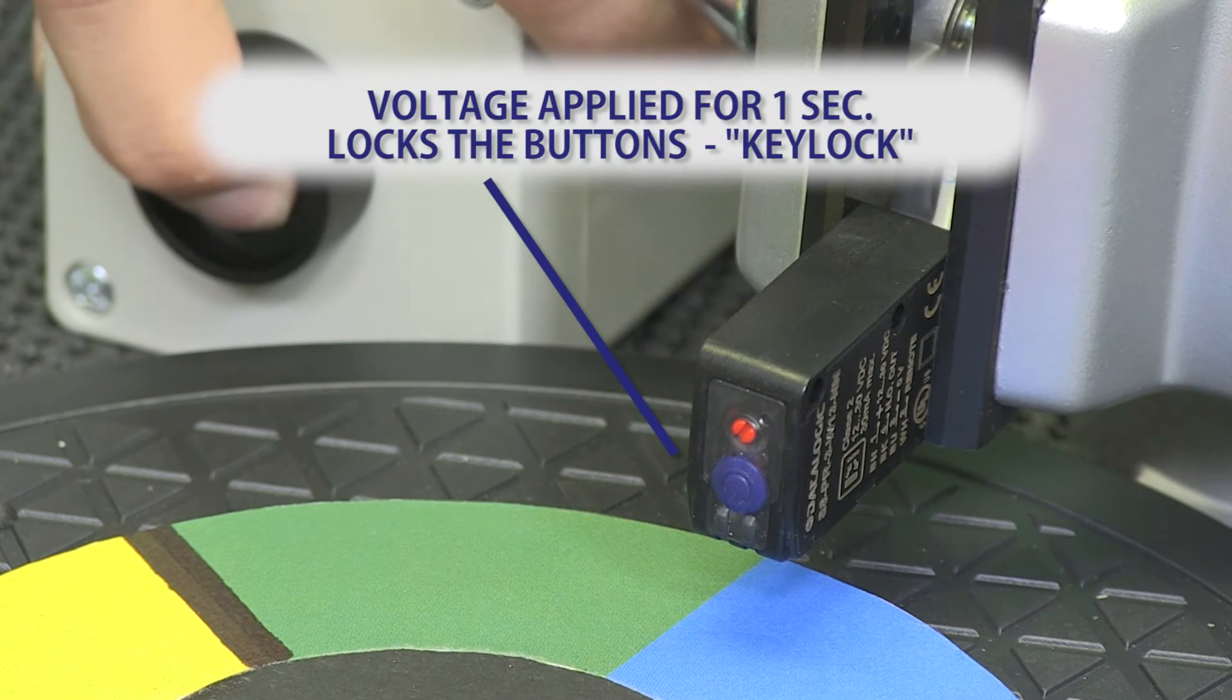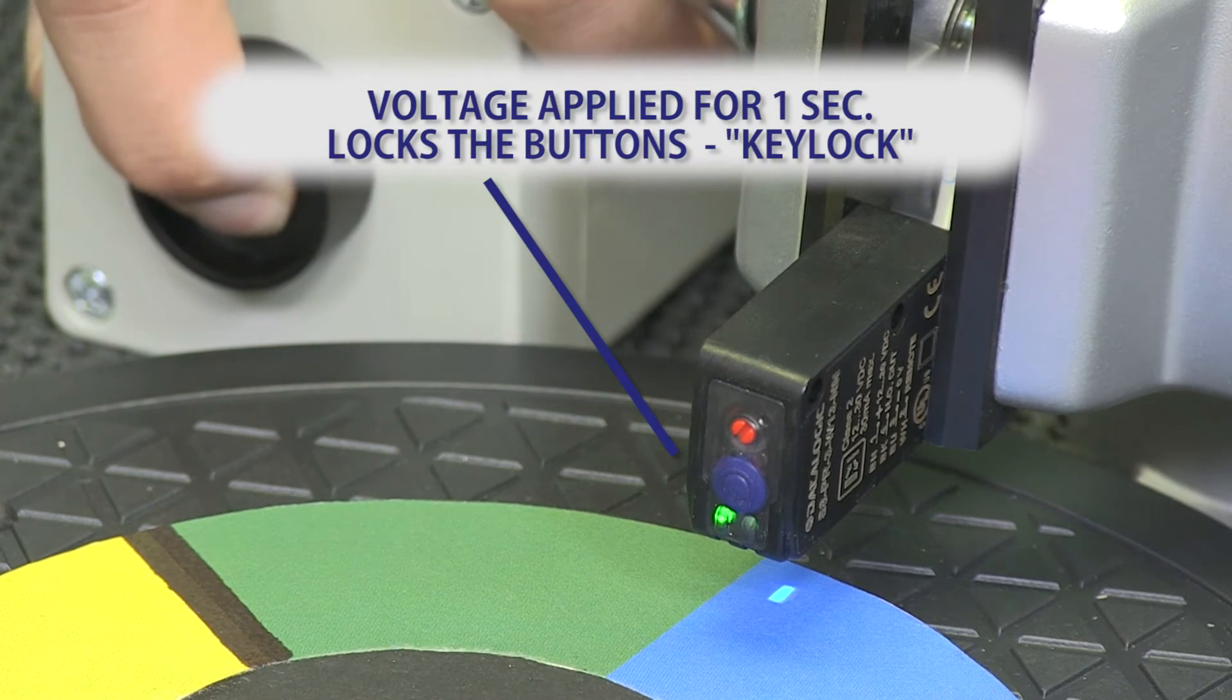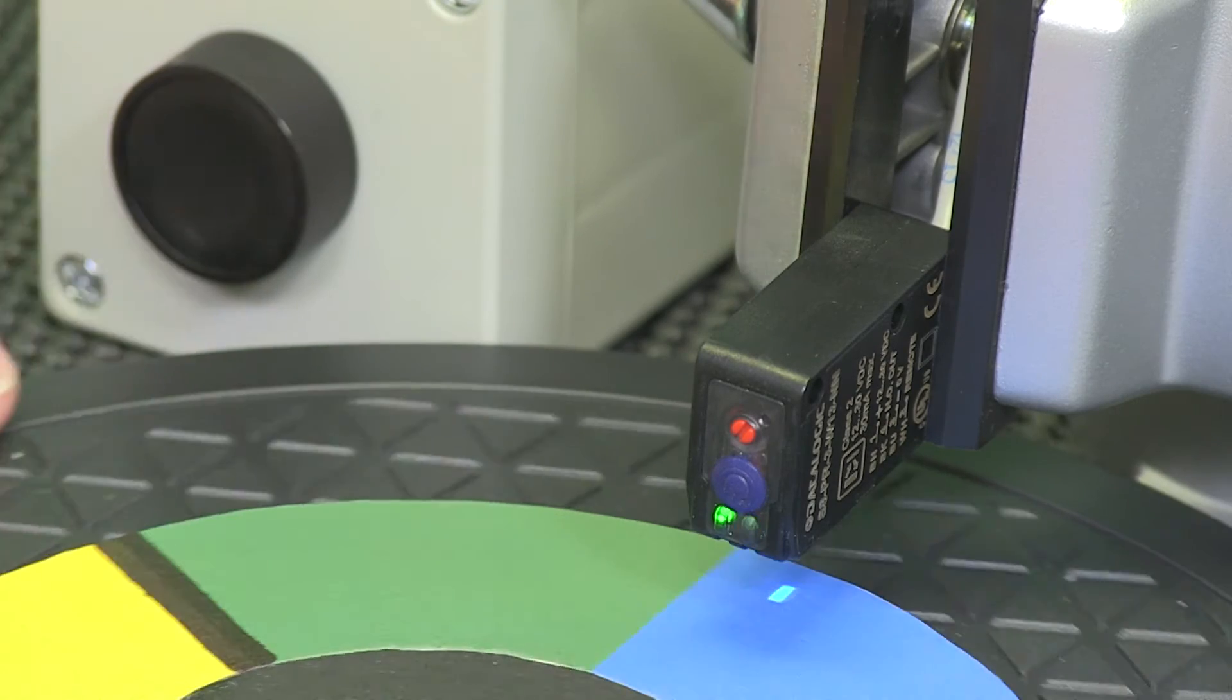This key lock function locks or is activated when the remote wire is connected to positive voltage DC for at least one second.